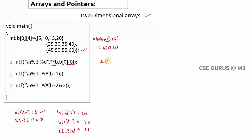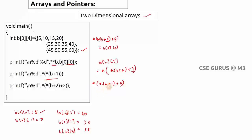To represent b[2][3] using pointer notation: it can be written as `*(*(b + 2) + 3)`. The braces are very important — if you omit them you will get a different output, not equal to b[2][3]. What about `*(*(b + 1))`? That's `*(*(b + 1) + 0)`, which becomes b[1][0] — second row, first column — which equals 25.